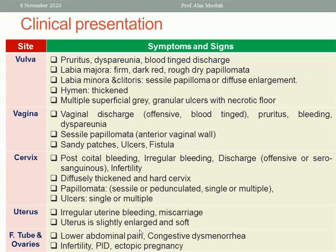If the vagina is affected, there is discharge which may be blood-tinged or offensive, pruritus also, bleeding, and dyspareunia. There may be cervical papilloma, commonly on the anterior vaginal wall, or sandy patches, lesions, ulcers, or even fistula with a nearby organ.